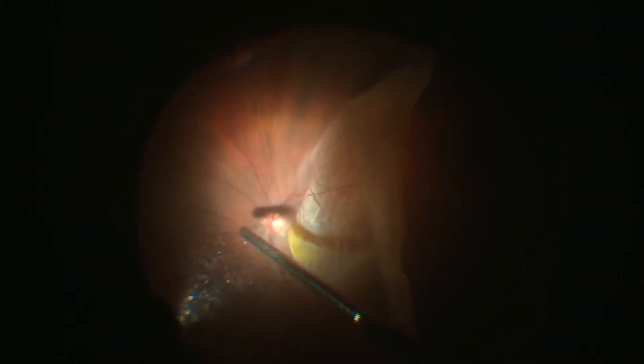Complete vitrectomy with trimming of the anterior leaflets of the tear are done as these sites are nidus for subretinal membrane reproliferation.